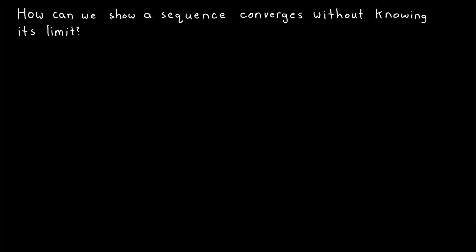Consider this question: how can we show that a sequence converges without knowing its limit? Thus far, in order to prove that a sequence converges, we almost always have to use the definition of convergence. That definition characterizes what it means for a sequence to converge to a particular limit, which means it's useless if we don't already have an idea of what the limit might be.